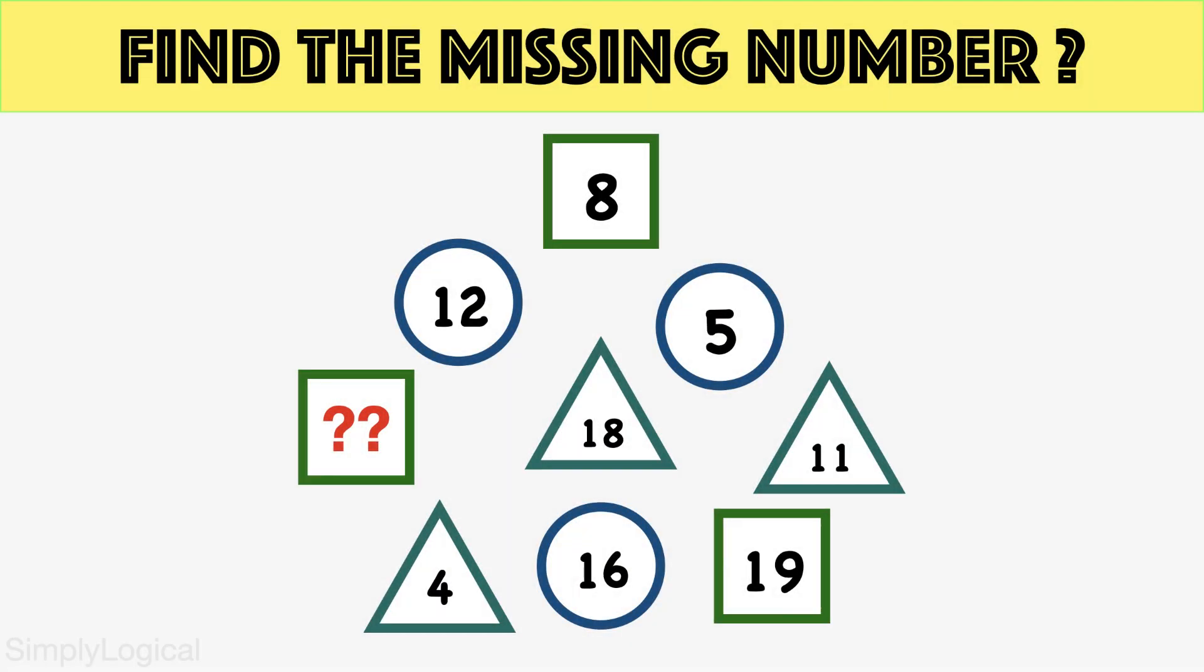In this problem there are different geometrical figures and each geometrical figure is represented with some numbers, but there is a missing number in one of the squares. There is an interconnected logic and our task is to find the logic and identify the missing number.